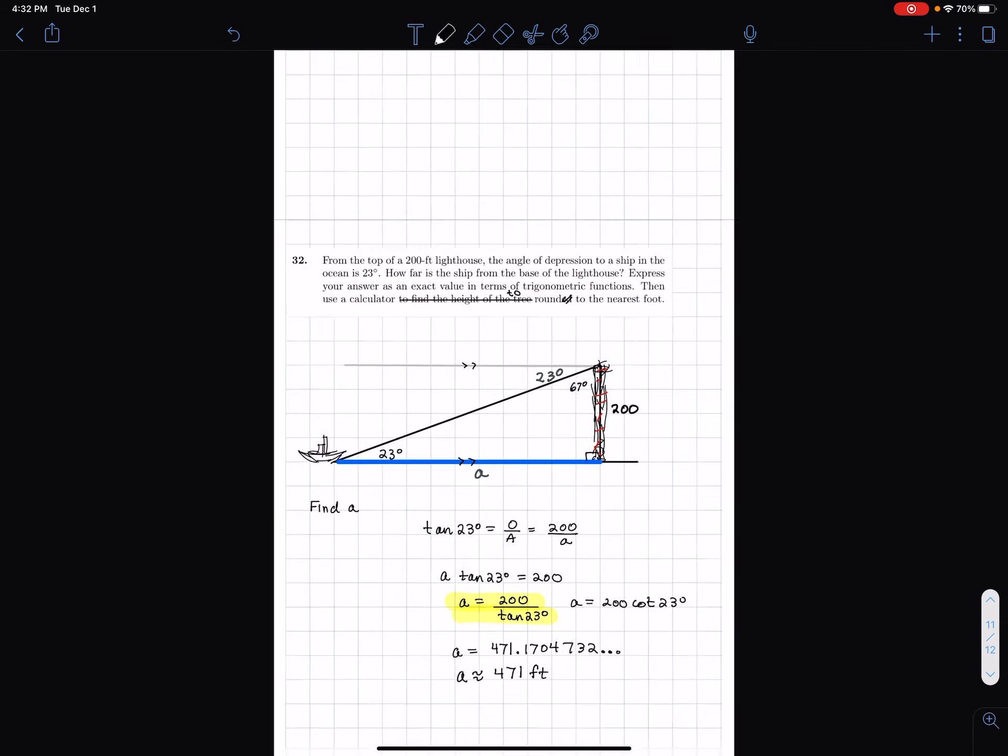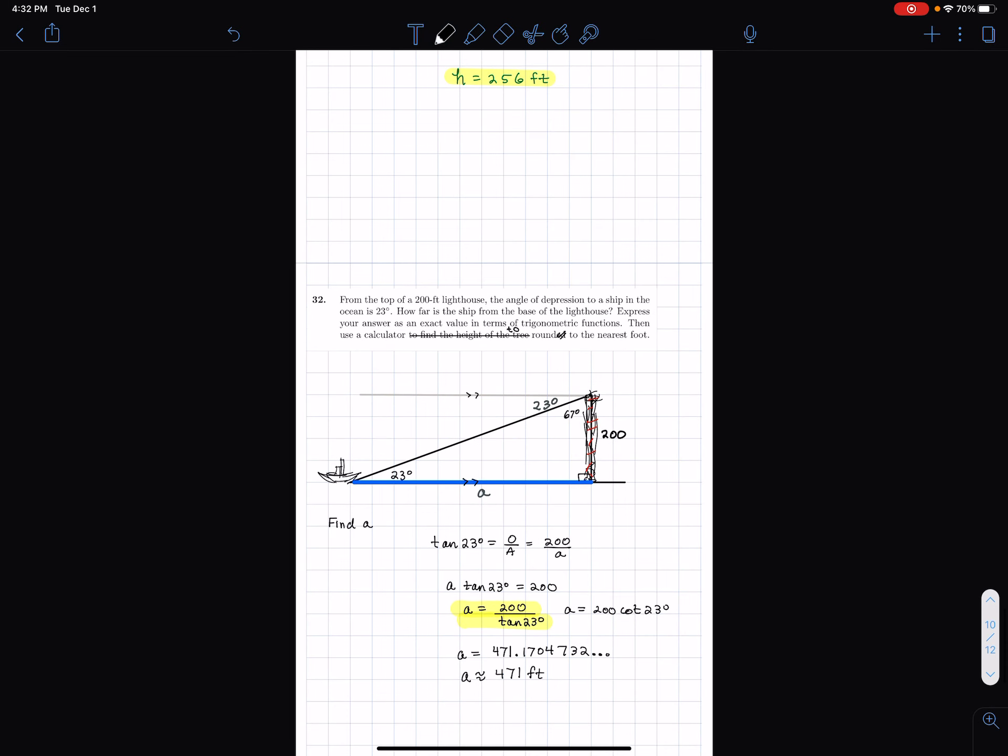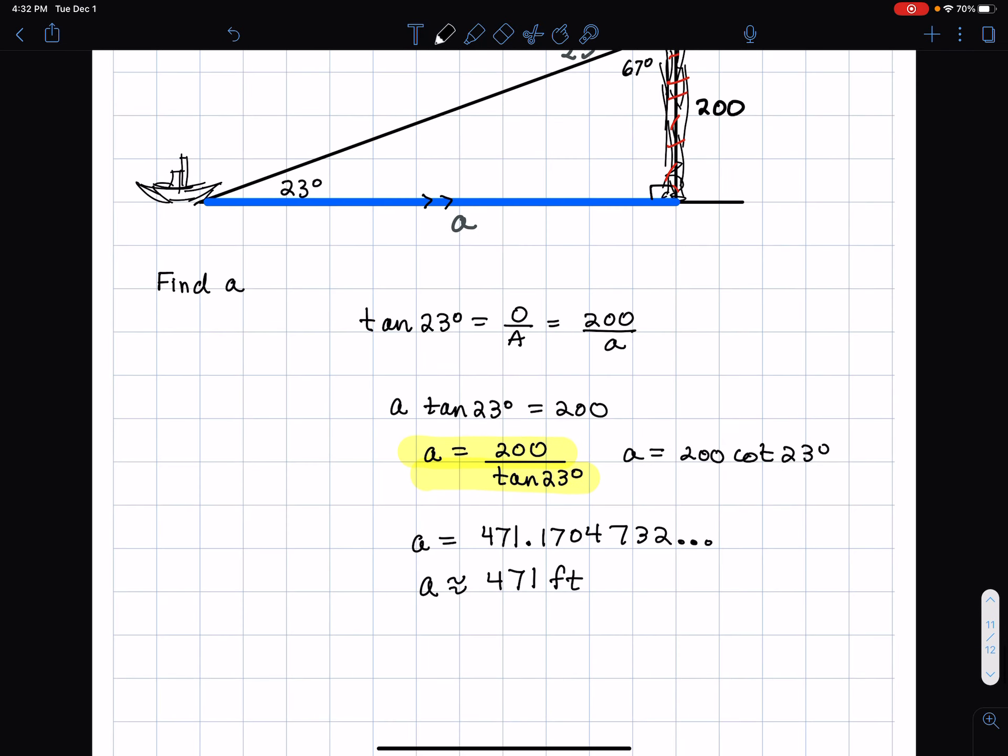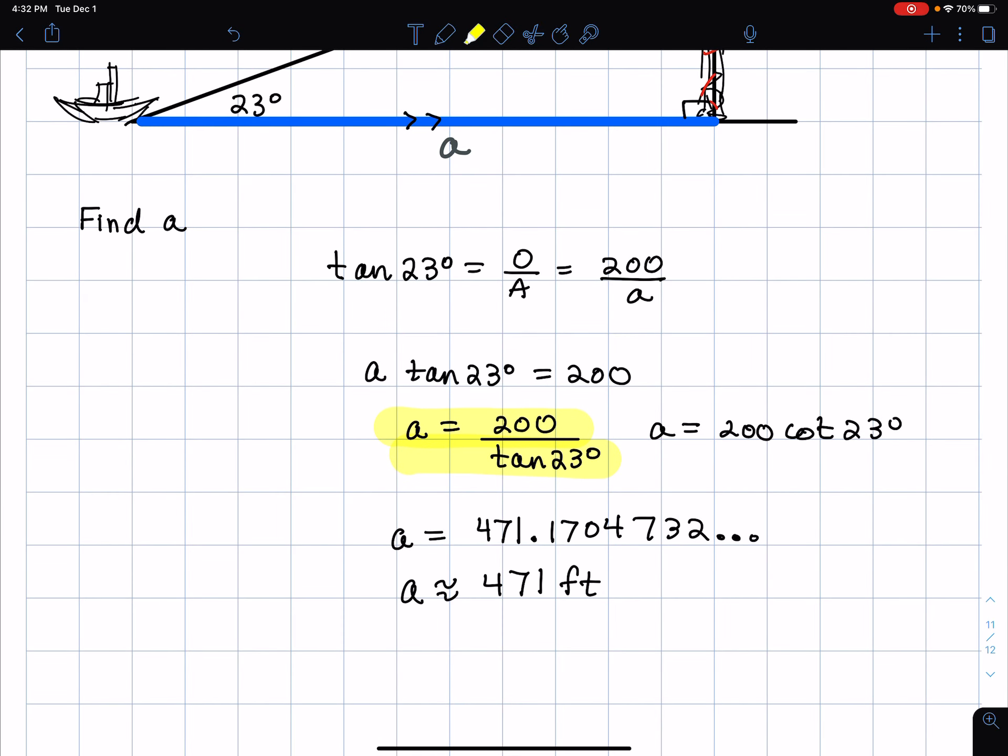I feel like on the last problem, I forgot to use approximately, which bothers me so much. Even though it's a different video. I want to put the approximately 256 feet when I round it. So, all right. It's not equal. It's approximate. And I'm not going to redo that video, though. That's too much.